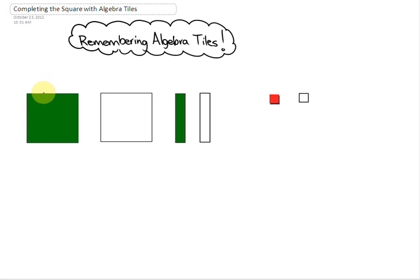This first algebra tile is the positive x squared tile. The second algebra tile, the large white square, is negative x squared.